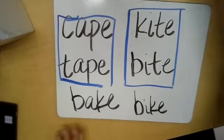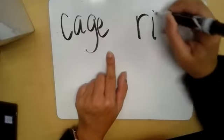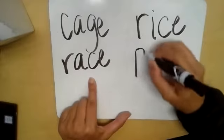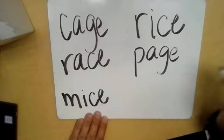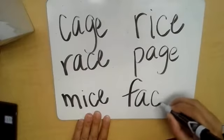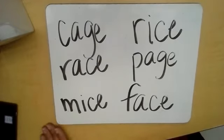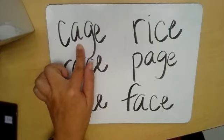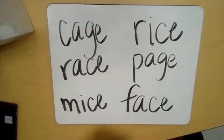Okay, let's look at another line. We have 'cage', 'rise', 'race', 'raise', 'page', 'mice', 'face'. Okay, I want you to notice that soft c and g sound that we were doing earlier in our video. What job does that silent e do? Yeah, it makes that vowel long. So you see with those vowels, all of these have that e, so it's going to make those vowels long.